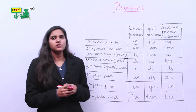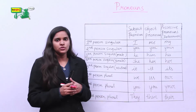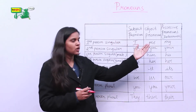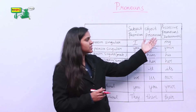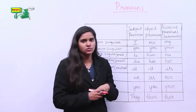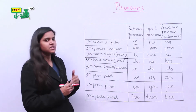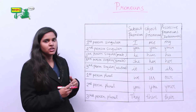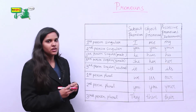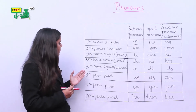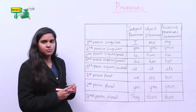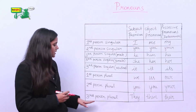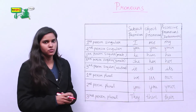Here is a table which denotes the subject pronouns, object pronouns, and possessive pronouns of first person singular, second person singular, third person singular, first person plural, second person plural, and third person plural form.